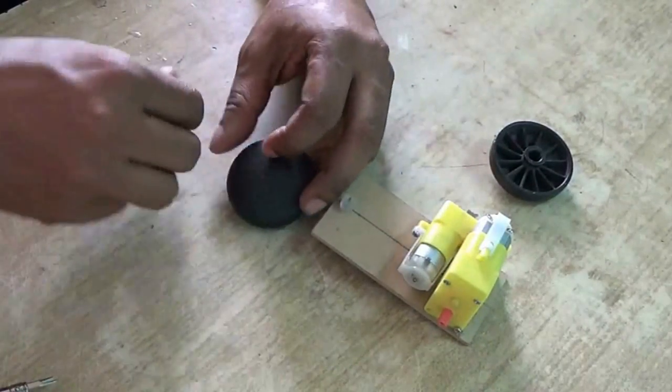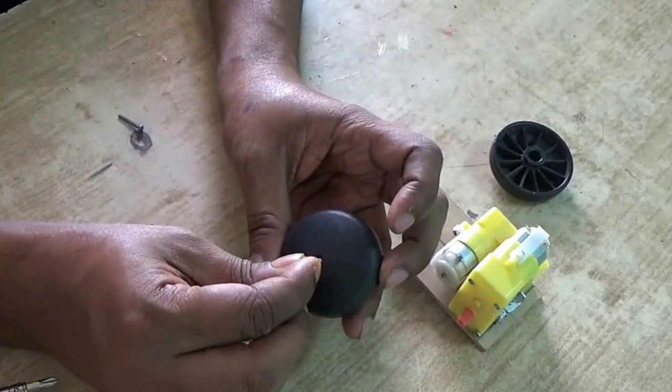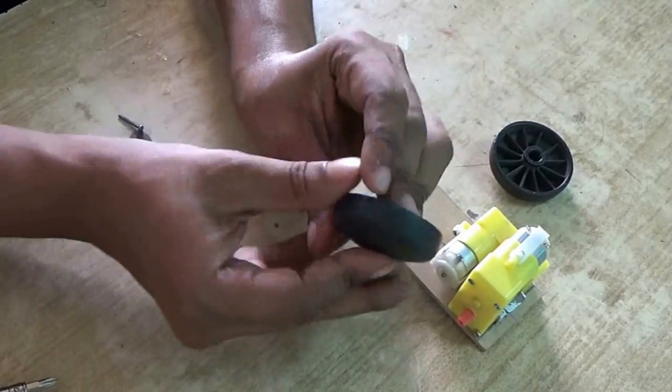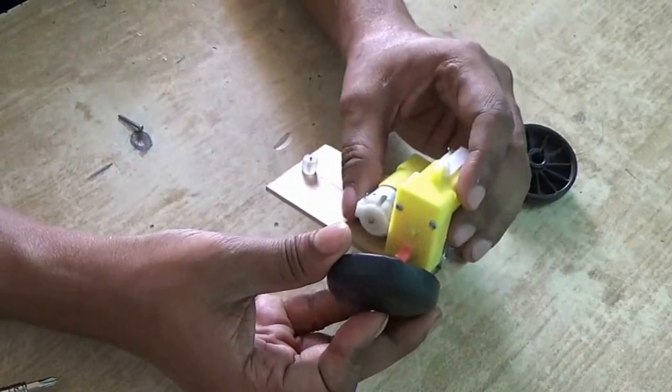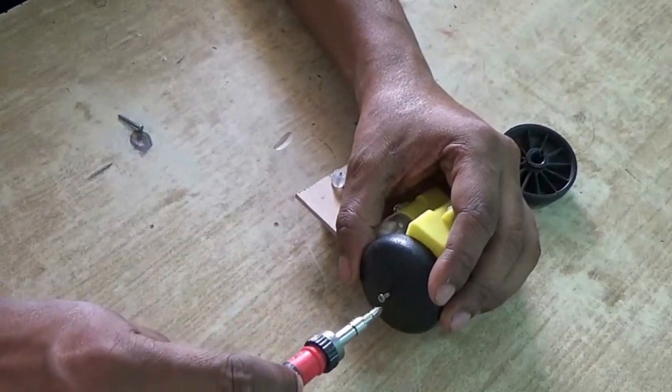Now with screws, connect two wheels to the two shafts. I have used two wheels from a broken revolving chair.